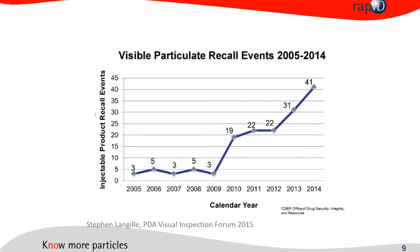Looking back over the last couple of years: when RepID started before 2002, there were nearly no recalls for particulate matter. When I made a survey around 2000, most people I called personally said they made investigations maybe two or three times a year. This changed somewhat in 2010 with a quick jump from three recalls to 19 recalls, and it hit a peak year in 2014 with 41 recalls for foreign particulate matter in parenteral drugs.